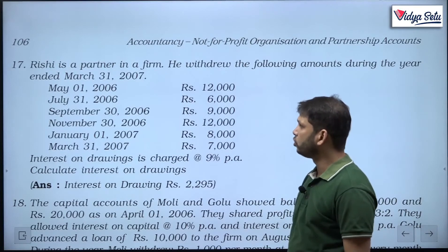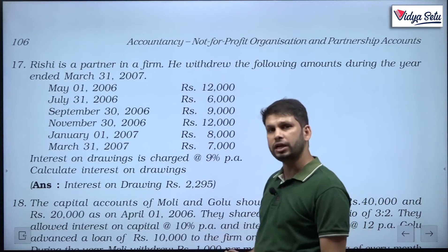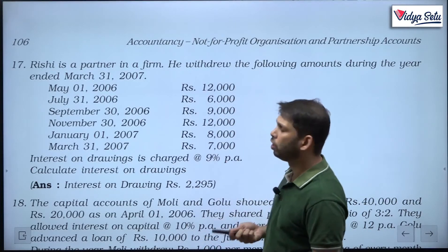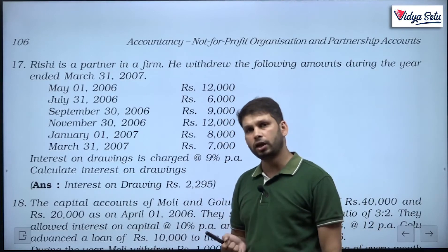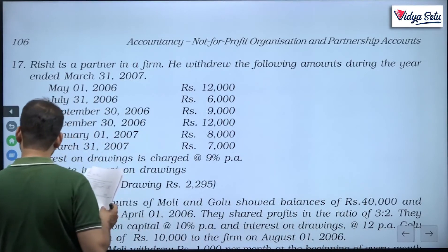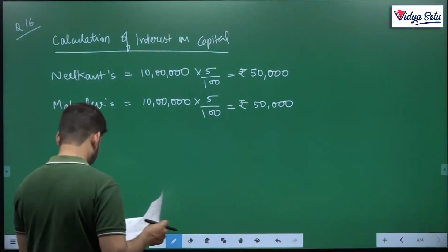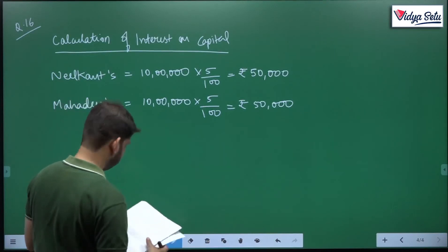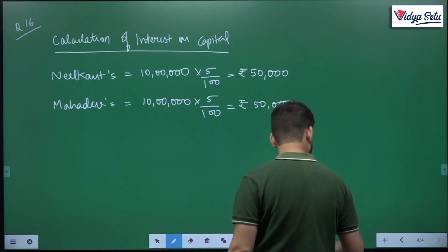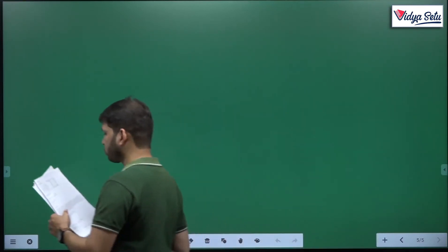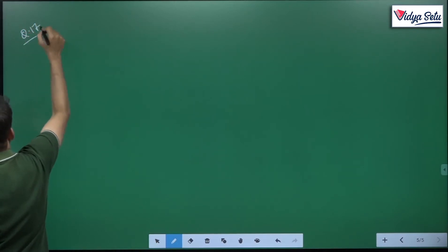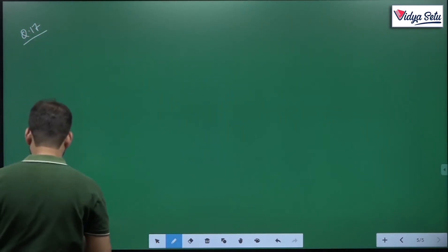We will calculate interest on drawings based on one thing: for how many months the money was used, and accordingly the interest will be calculated. So, question 17 — calculation of interest on drawings.